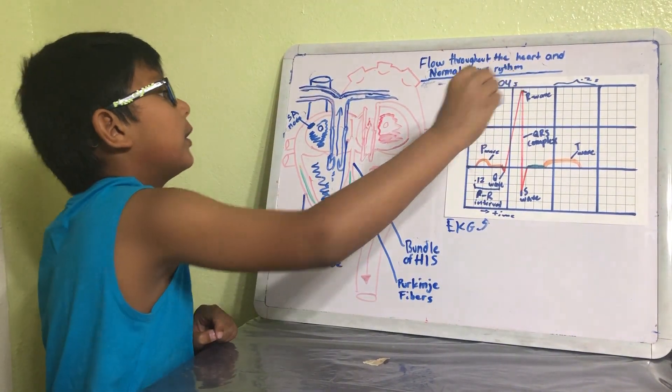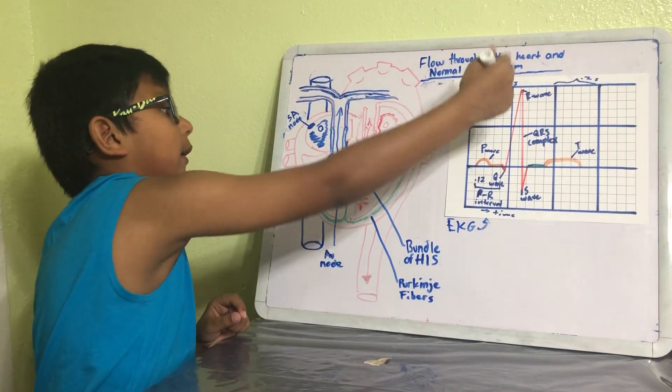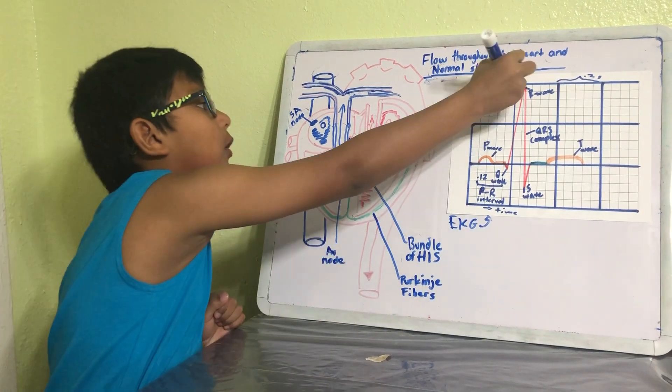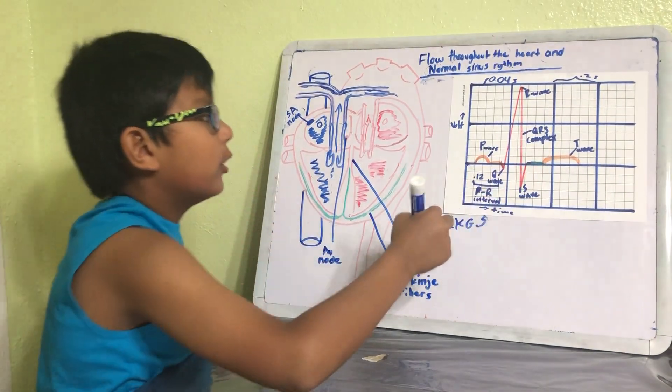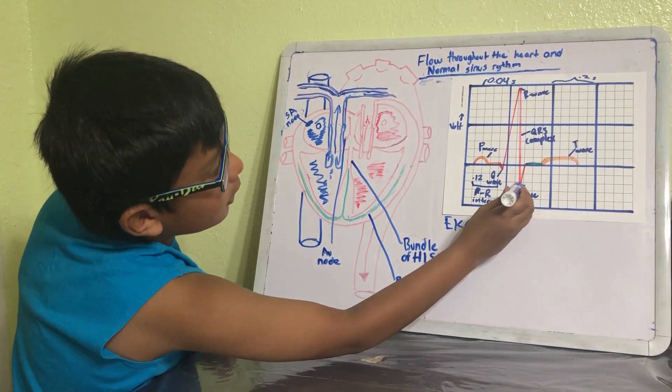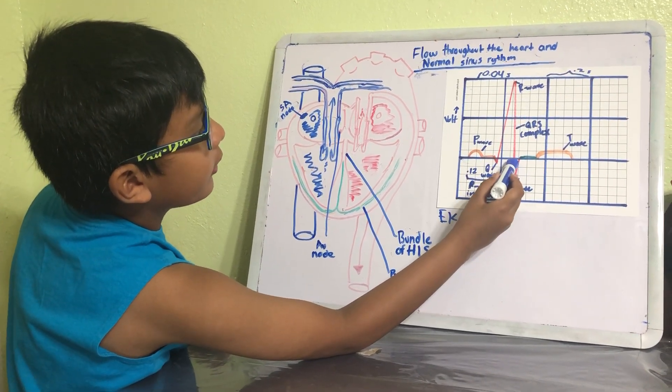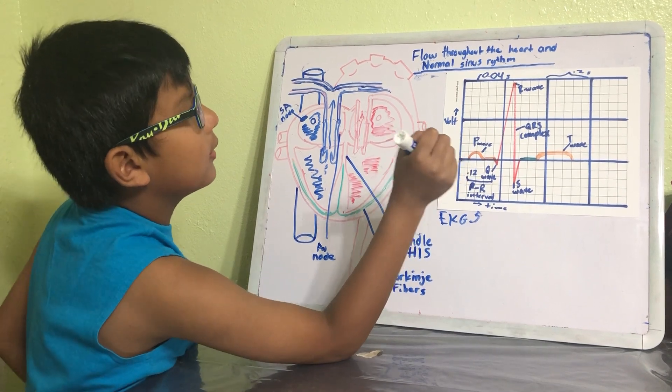And then we go sharply down to the S wave. So the time interval between here and here is about 0.08 seconds, and then we get to the midline.